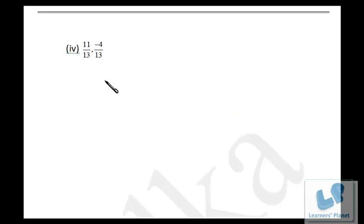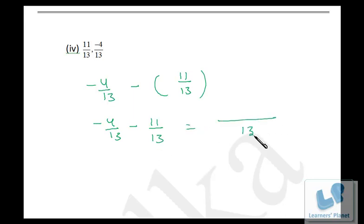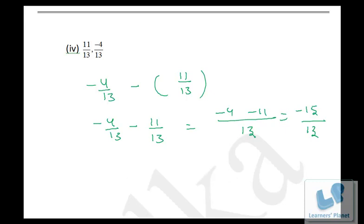Now in this case, we have to subtract 11/13 from minus 4/13. So it's minus 4/13 minus 11/13. Take 13 as LCM — it is minus 4 and minus 11. So it is minus 15 over 13.